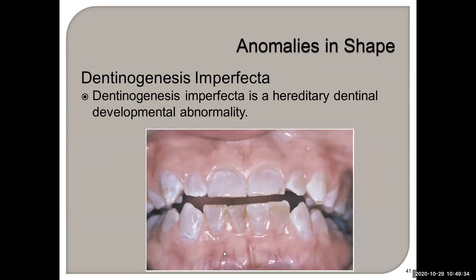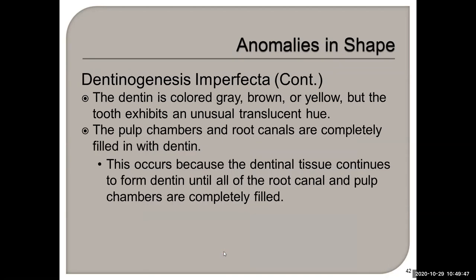Dentinogenesis imperfecta is a hereditary dentinal developmental abnormality. The dentin is colored gray, brown, or yellow, but the tooth exhibits an unusual translucent hue. The pulp chambers and root canals are completely filled with dentin because the dentinal tissue continues to form dentin until the root canal and pulp chamber is completely filled.